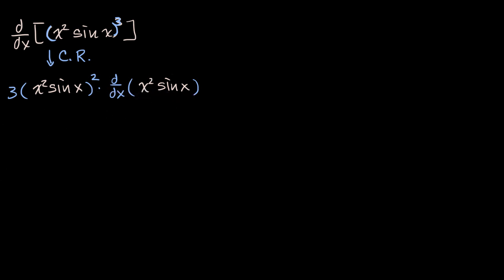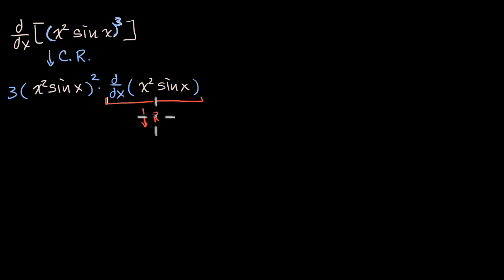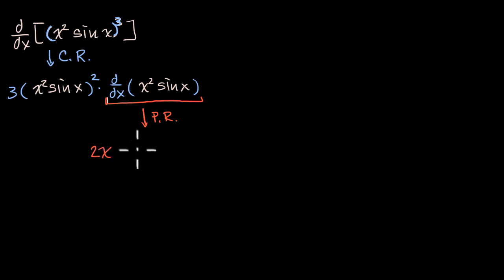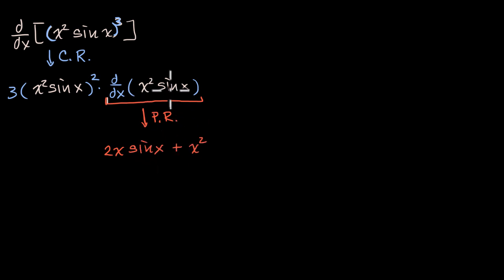Now the second part — here I would apply the product rule, since I have the product of two expressions. So this is going to be the product rule: I take the derivative of the first expression, so the derivative of x squared is two x, times the second expression sine of x, plus the first expression x squared times the derivative of the second one, cosine of x. That's the product rule applied to this part.